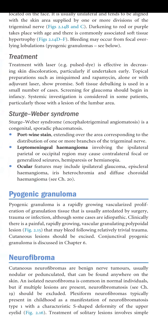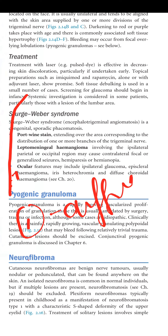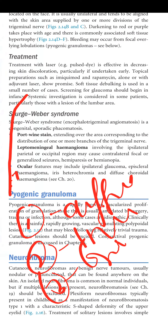Sturge-Weber syndrome — encephalotrigeminal angiomatosis — is a congenital or sporadic phakomatosis involving port wine stain, leptomeningeal hemangioma, and ocular features. There are four ocular features associated with Sturge-Weber syndrome: diffuse choroidal hemangioma, iris heterochromia, glaucoma, and episcleral hemangioma.